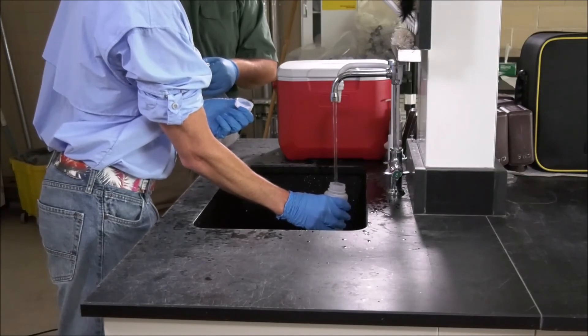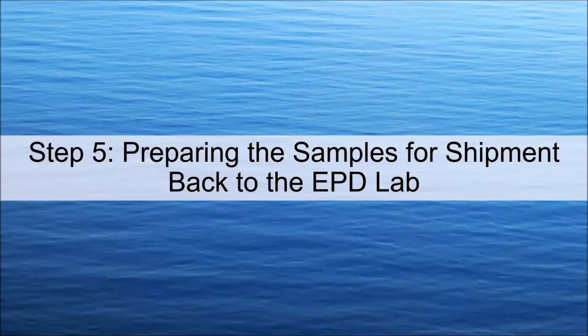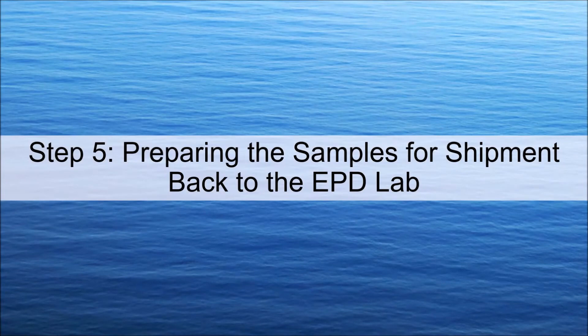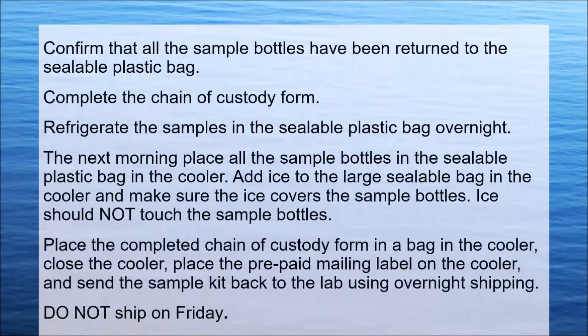Step 5: Preparing the samples for shipment back to the EPD lab. Confirm that all the sample bottles have been returned to the resealable plastic bags. Fill out the chain of custody form with date and time of sample collection and the name of the person who collected the samples. Remember, do not use a permanent marker.